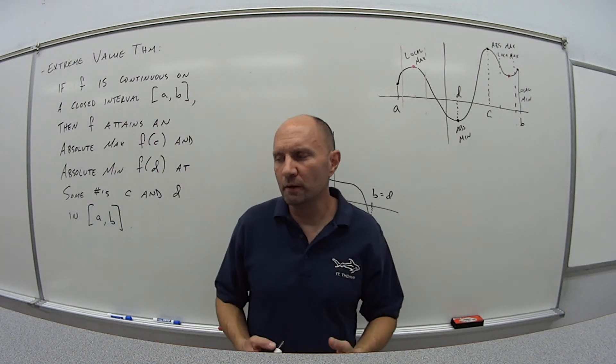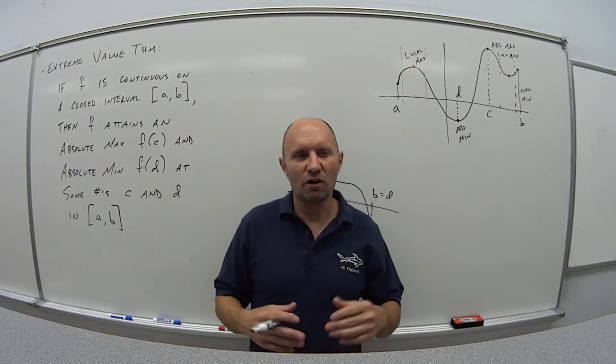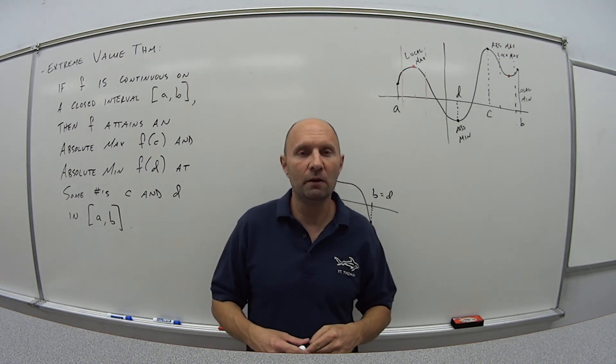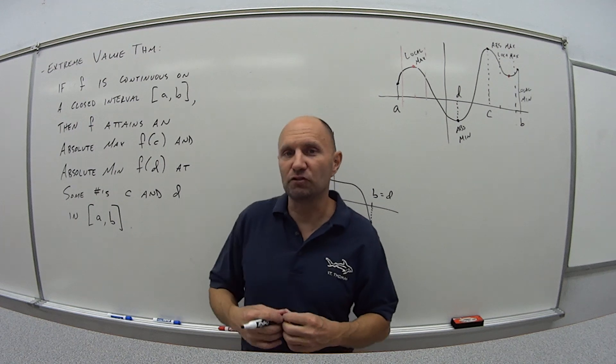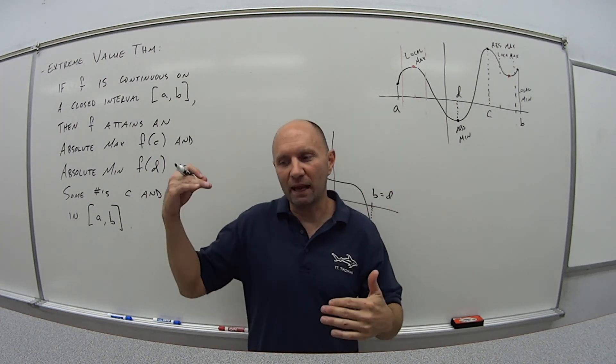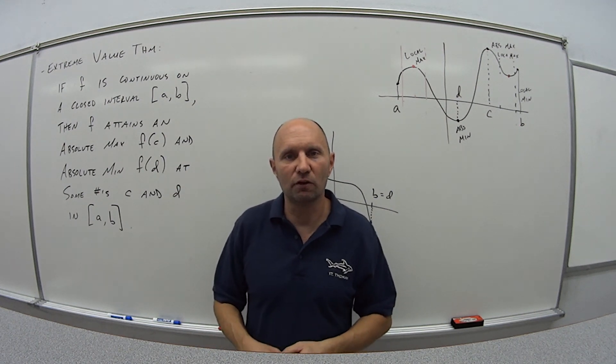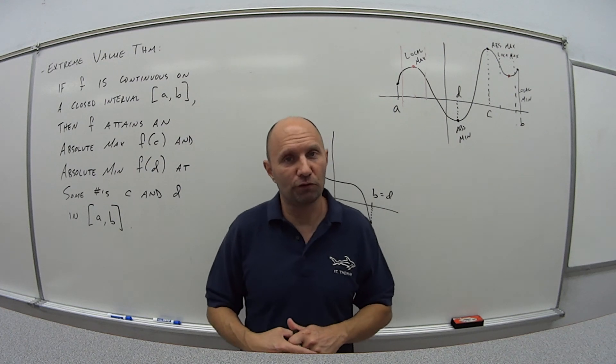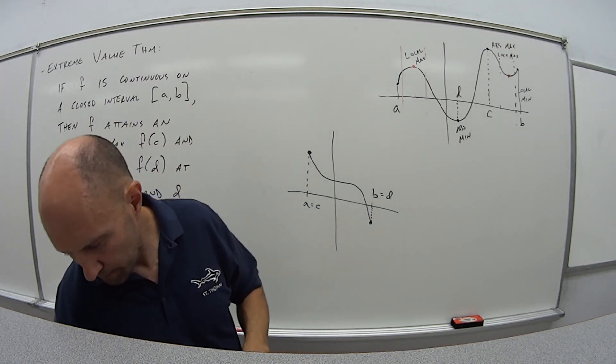So that's the end of video one, kind of an idea of distinguishing between absolute max versus local max or min, and then this idea of extreme value theorem, that if we have a closed interval, there has to be a maximum and a minimum value within that interval. So come on back, we'll do video two, and that'll wrap up the videos for section 4.1.